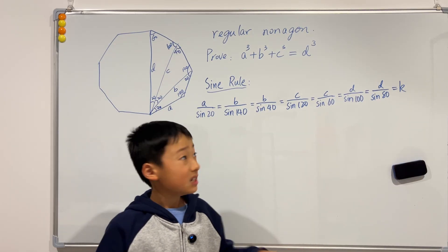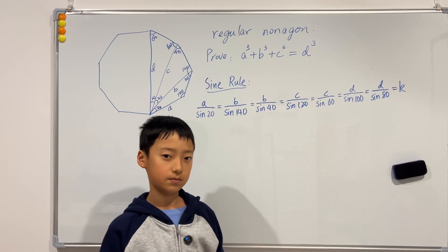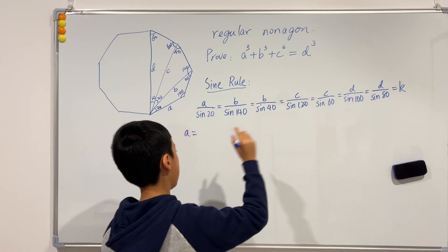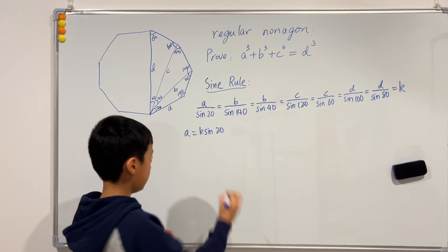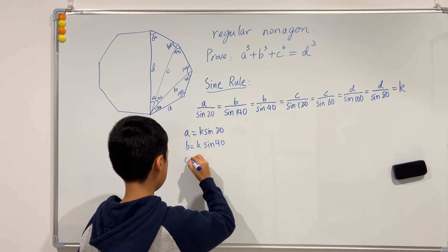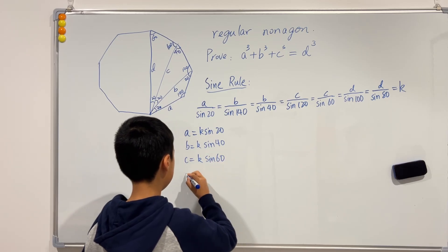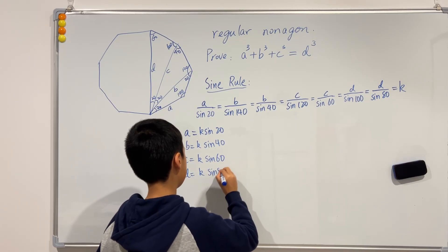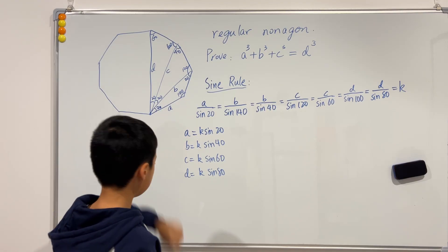Now we do this because we can now express a, b, c and d all in terms of k. For example, we can see that a would just be multiply sine of 20 to the right hand side, k times sine of 20. Then you can do the same for the rest. b would be k times sine of 40, c would be k times sine of 60, and d would be k times sine of 80. So now we have to prove that this cube plus this cube plus this cube equals this cube.